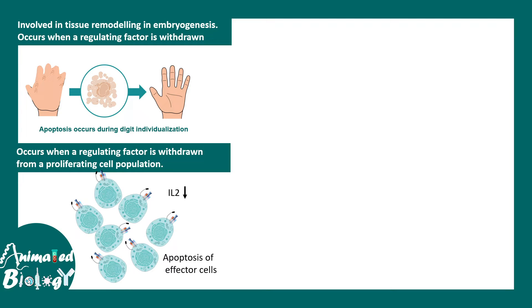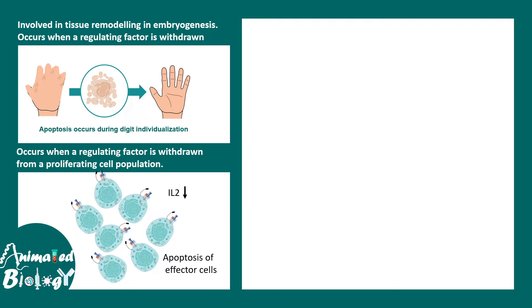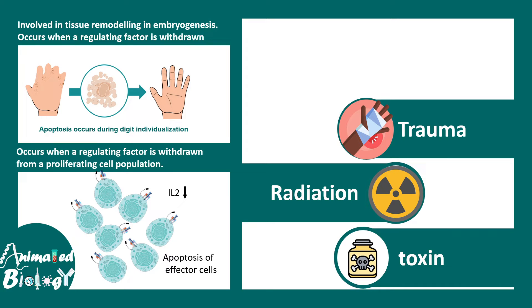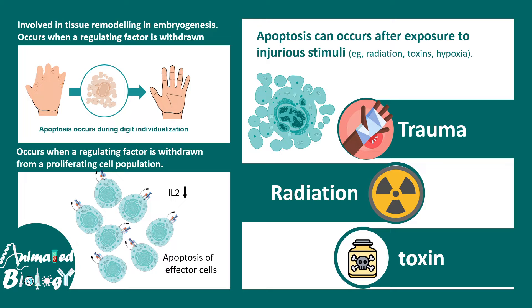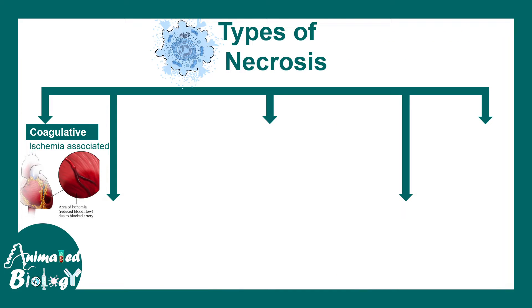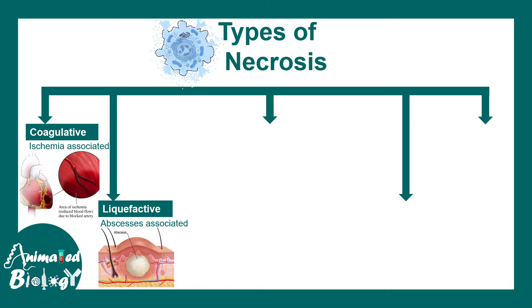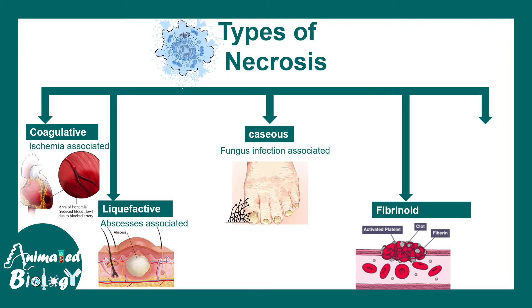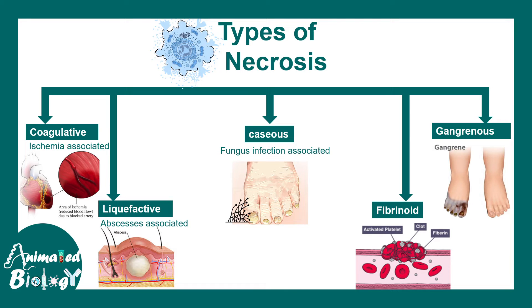Apoptosis can also be associated with pathology. For example, trauma, radiation, and toxin exposure can lead to apoptosis. For necrosis to occur, there has to be some sort of infection or injury — for example, ischemia, reperfusion injury, abscess development, fungal infection, injury, blood clot-associated necrosis, or gangrenous infection. Each of these categories is associated with some sort of infection or injury.